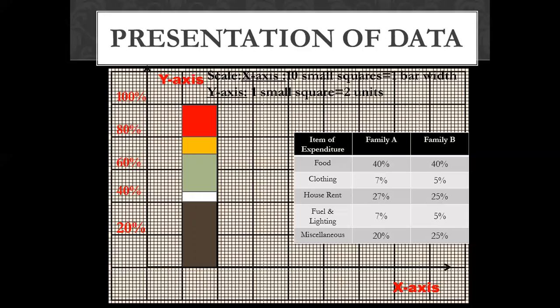Next, we have family B. We have 40% food, which needs 20 small scales. Then 5%, which is almost 3 small scales. Then 25%, which is 12 small scales — almost 12 to 13 small scales.